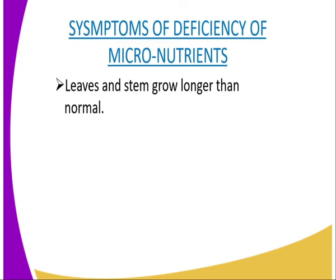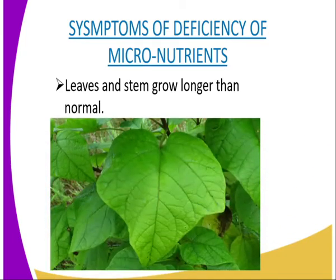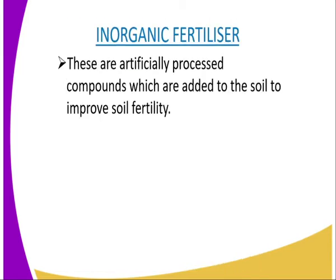Then, symptoms of deficiency of micronutrients. The first one: leaves and stem grow longer than normal. You can find that the leaves have a very big size and are exaggerated. As you can see in the example shown, it's a very big leaf, meaning that the plant lacks micronutrients.